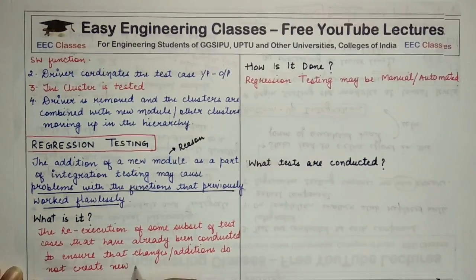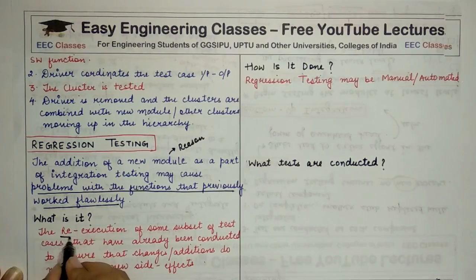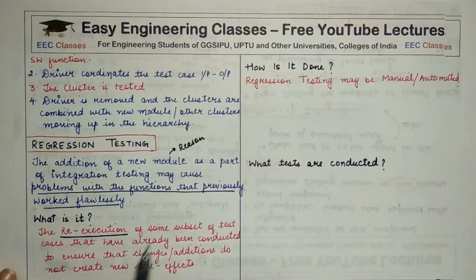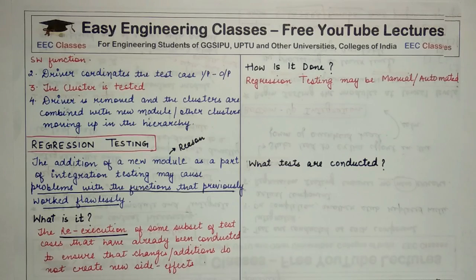Or you can say they do not create any side effects. So basically, regression testing is the re-execution. It is not the execution but re-execution of some subset of test cases that have already been conducted, to ensure that changes or additions do not create new side effects.